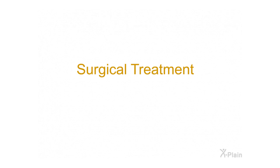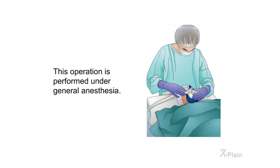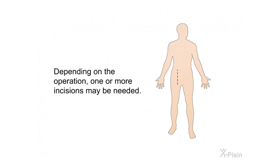Surgical treatment. The aim of the operation is to allow blood to flow freely into the legs from the aorta. This operation is performed under general anesthesia. Depending on the operation, one or more incisions may be needed.